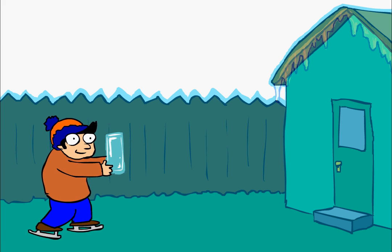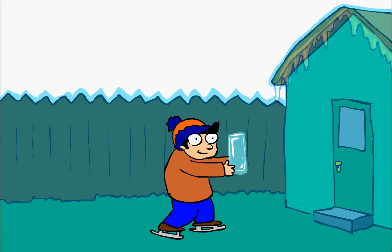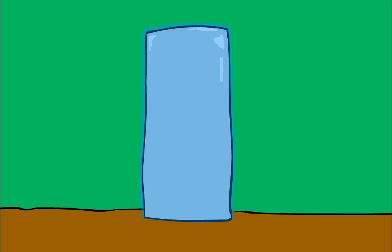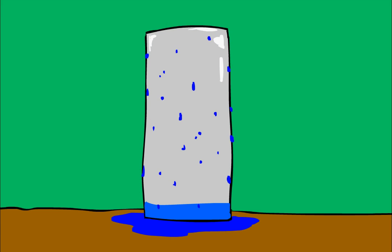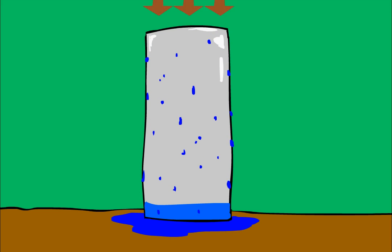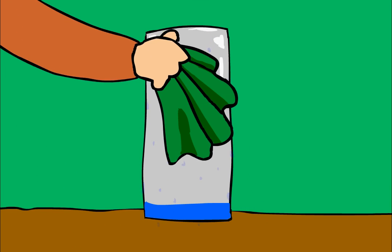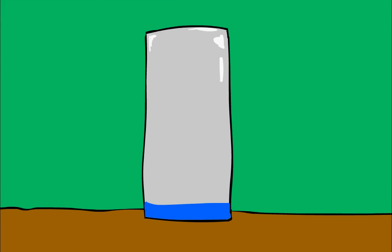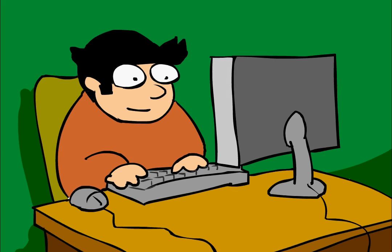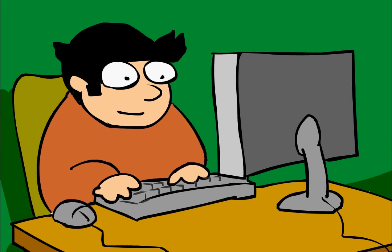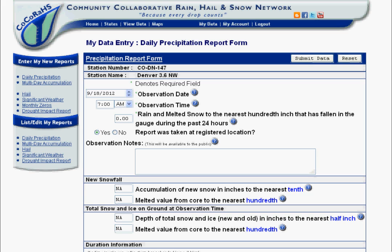You can still report daily precipitation by bringing your ice-glazed rain gauge inside, where you can then measure the liquid amount once it thaws. Remember, you're just measuring what fell inside the gauge, not outside — so make sure to wipe the excess moisture off with a dry towel before you measure.